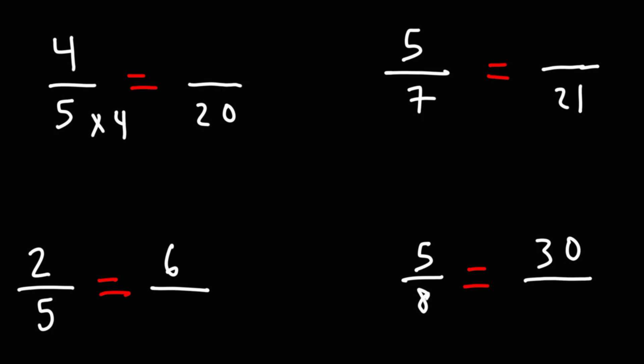So to get to 20 from 5 we need to multiply by 4, and whatever we do to the bottom fraction we need to do to the top part of the fraction. So we got to multiply the top number by 4. 4 times 4 is 16, and that will give us the equivalent fraction 16 over 20, which is equal to 4 over 5.